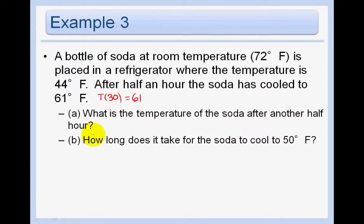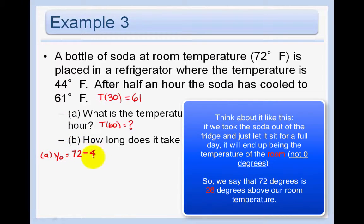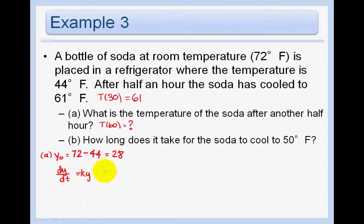We want to find T(60). Instead of using initial temperature 72°F directly, we use the difference: y₀ = 72 − 44 = 28. So dy/dt = ky with y₀ = 28, giving y(t) = 28e^(kt).